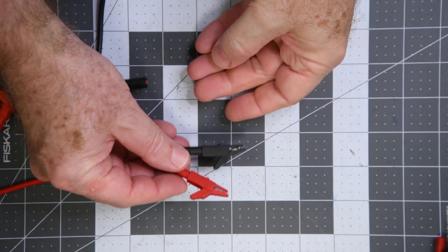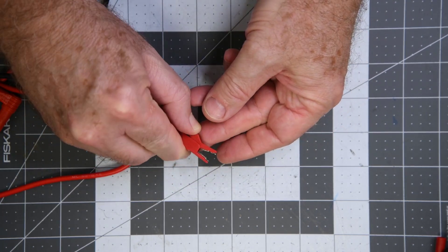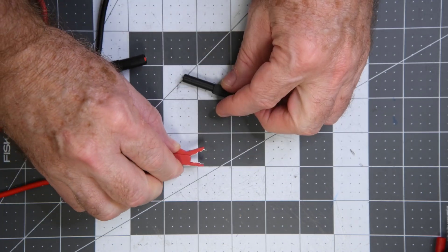The small alligator clips. Same ones that came in the KET-12 kit. They have held up quite well. Better really than I was expecting when I first saw them.